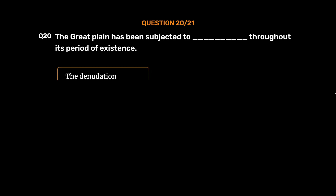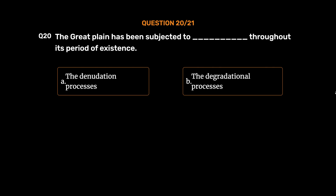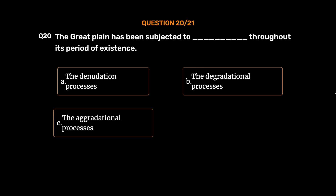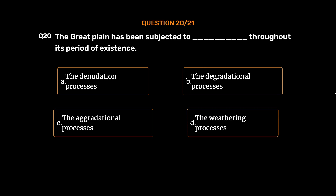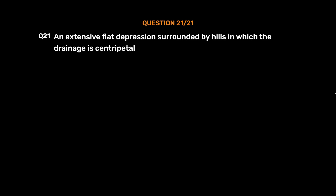Question number 20: The Great Plain has been subjected to what process throughout its period of existence? Option A: The denudation processes. Option B: The degradational processes. Option C: The aggradational processes. Option D: The weathering processes. The correct answer is Option C, the aggradational processes.